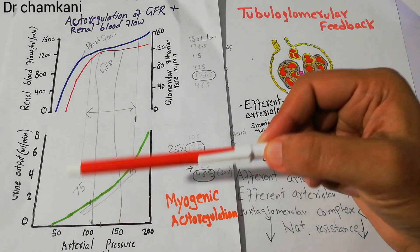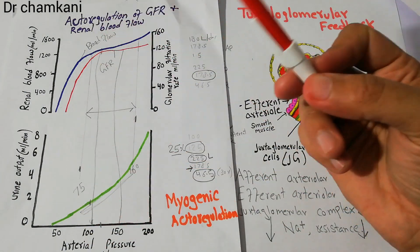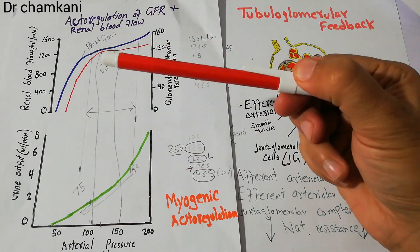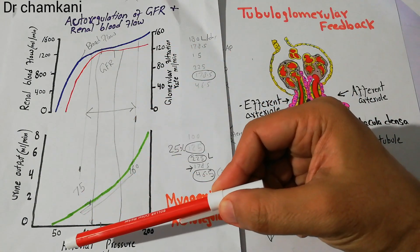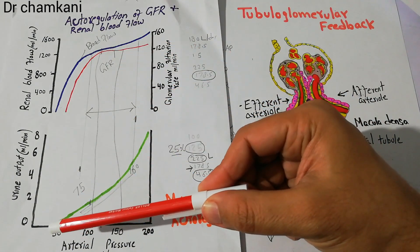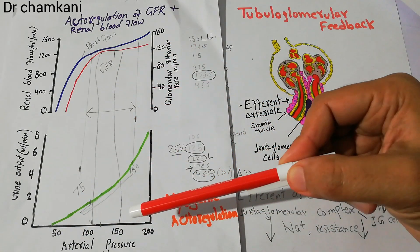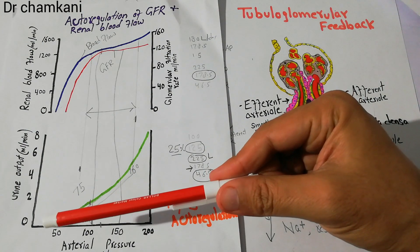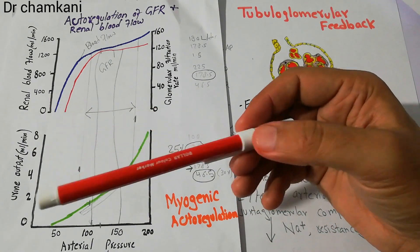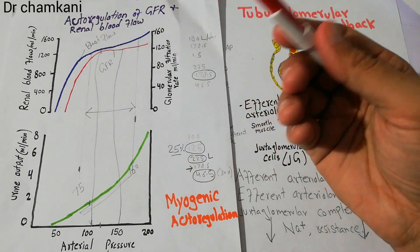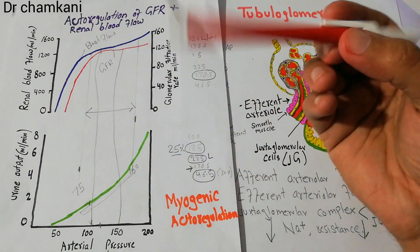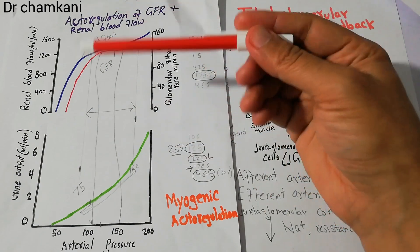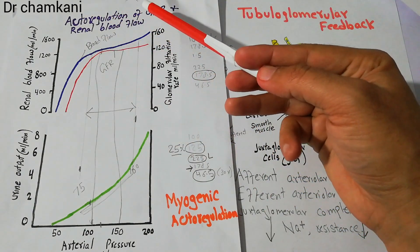When the pressure of the blood supply to the kidney — the arterial pressure — increases or decreases, that increase or decrease is minimized; its effect is essentially absorbed through the mechanism of autoregulation.